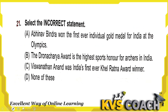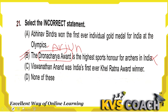Next: select the incorrect statement. Option A: Abhinav Bindra won the first ever individual gold medal for India at the Olympics — this is correct. Option B: The Dronacharya Award is the highest sports honor for archers in India — this is not correct, because the highest award for archers is the Arjuna Award, not the Dronacharya Award. So option B is the incorrect statement. Option C: Vishwanath Anand was India's first ever Khel Ratna Award winner — absolutely right. Option B is the right answer as the incorrect statement.